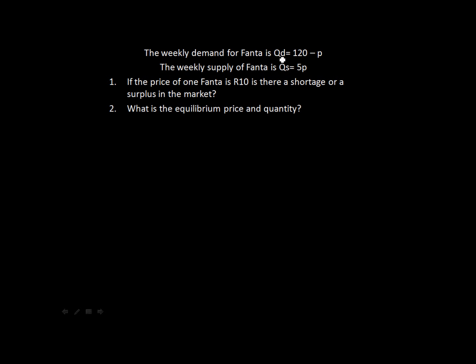Quantity demanded QD equals 120 minus P, where P is the price, and quantity supplied equals 5P, where P is again the price. In the first part of the question they ask us: if the price of one can of Fanta is 10 Rand, is there a shortage or a surplus in the market?